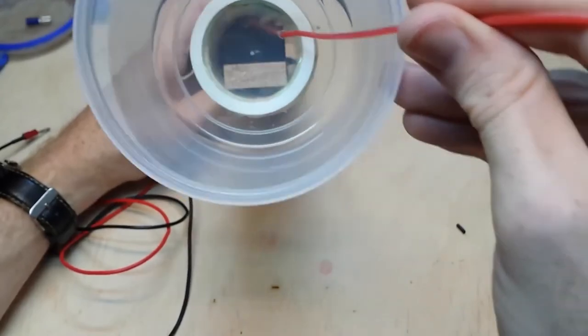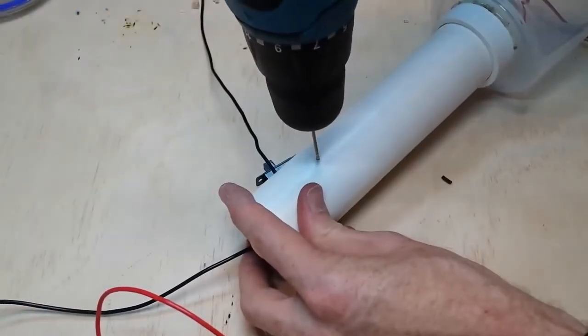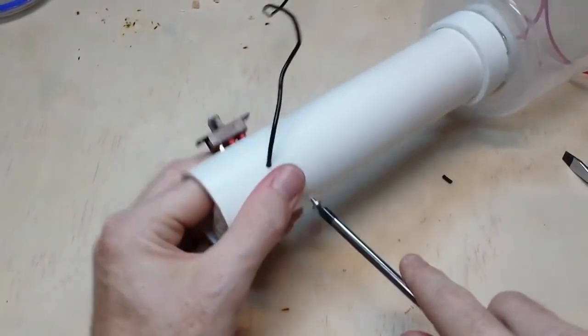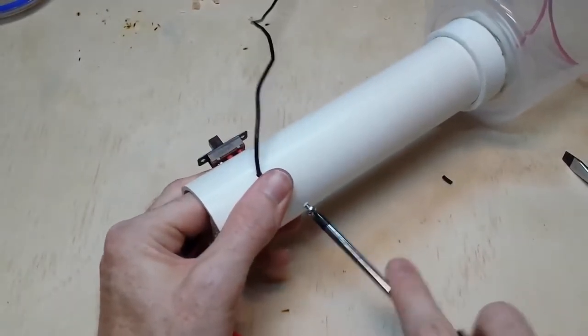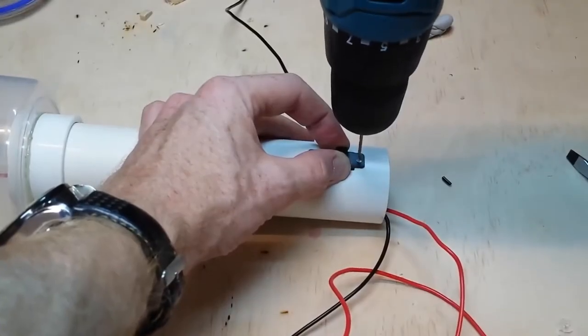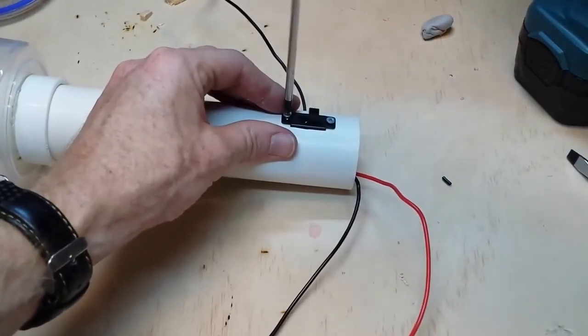To secure the piece of wood inside the handle, I drill a hole in the back and insert a self tapping screw that holds the piece of wood in place against the inside of the handle. And I do the same for the switch. The small screws hold the switch firmly against the handle.